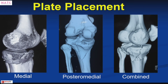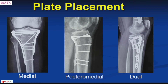To decide plate placement, assess where the fracture exits. If the fracture exits on the medial surface and also on the posterior surface, there are two separate apexes, and depending on that you will need a medial plate, a posteromedial plate, or a dual plate. You need to know exactly where the fracture is exiting.